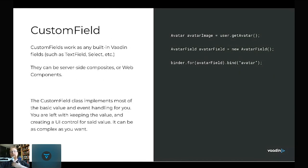Custom fields can be any sort of Vaadin component — web components or server-side composites, which I'm going to use here for simplicity. There are exactly two methods you need to implement. After you've created your custom field, you can use it as shown: you have your avatar data type, create an avatar field, and then use the avatar field in the binder. Simple as that.